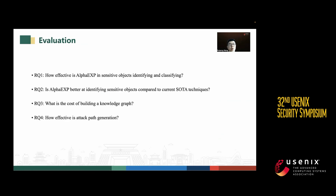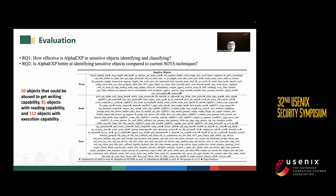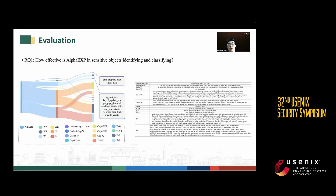We evaluated our approach with several research questions. For the first and second research questions, we found objects including 50 writing objects, 81 reading objects, and 112 executing objects. We also marked the objects found by state-of-the-art approaches and found more results. In addition, we classified those objects into 12 sensitivity levels, as shown in the slide.